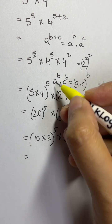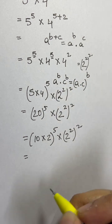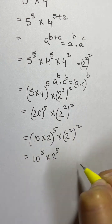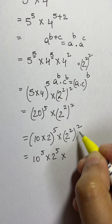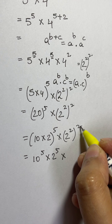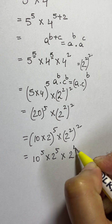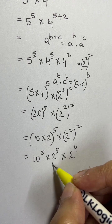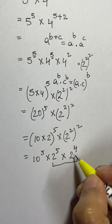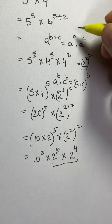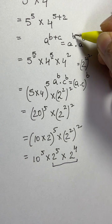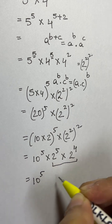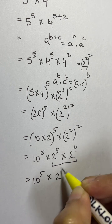Using the formula (a times c)^b = a^b times c^b, we split (10 times 2)⁵ into 10 to the power of 5 times 2 to the power of 5. Then (2²)² gives 2 to the power of 4. Multiplying 2⁵ times 2⁴ — same base, add the powers — gives 2 to the power of 9. So we have 10⁵ times 2⁹.